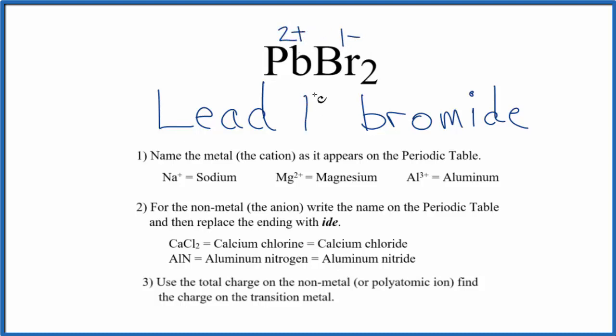And we show that in the name by writing the Roman numeral 2 and putting parentheses around it. So the name for PbBr2 is lead 2 bromide. Note that sometimes this is called lead dibromide, but the official name for PbBr2 is lead 2 bromide.